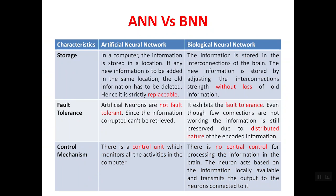The final characteristic is the control mechanism. In artificial neural networks, there is a centralized control system that monitors all activities of the computer. But in biological neural networks, there is no central control system for processing information. Instead, information is stored in the neurons of the brain, and each neuron acts based on the information it receives, processes it, and passes the output to the connected neurons.